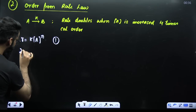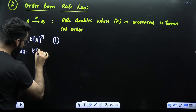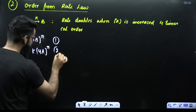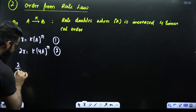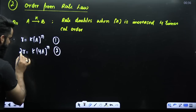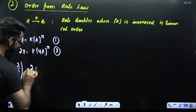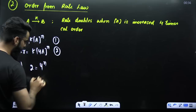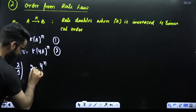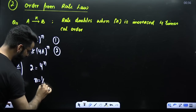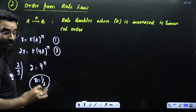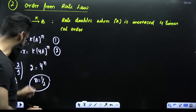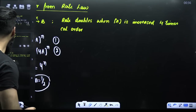Rate is doubling when concentration of A becomes 4 times, so it becomes 2R equals K times (4A) raised to power N — equation number 2. Divide equation 2 by equation 1: R cancels, K cancels, A^N cancels, giving 2 equals 4 raised to power N. From this, N equals 1/2. So the order of the reaction is 1/2. These questions are frequently asked in the NEET examination.